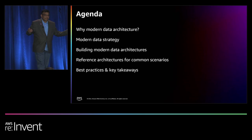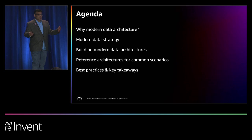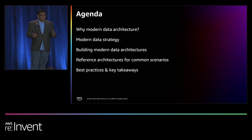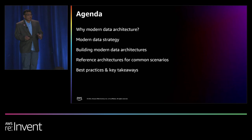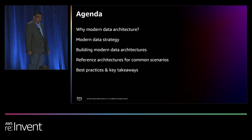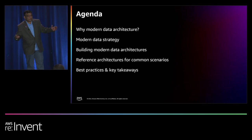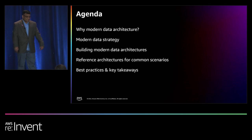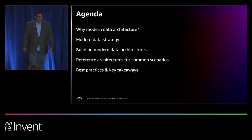Let us look at the detailed agenda for today's session. First, we will understand why we need to build modern data architecture. In order to build modern data architecture, you need to have a strategy, so we will discuss about modern data strategy to build modern data architectures on AWS. I will deep dive into how to build modern data architectures on AWS by using AWS purposeful data services. I will also show you a few reference architectures for common scenarios that can be used across various industries. At the end, I will conclude with a few best practices and key takeaways from the session.